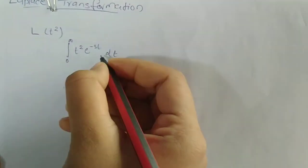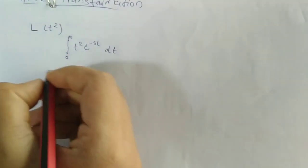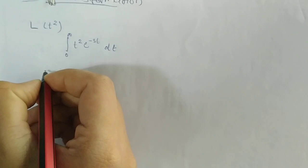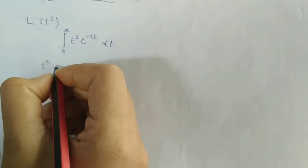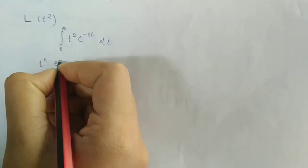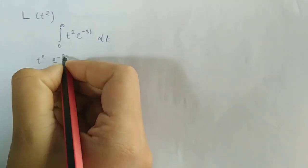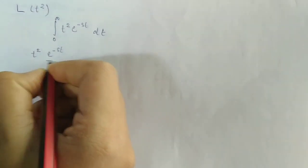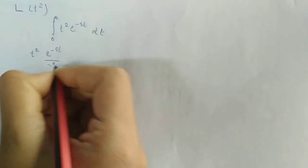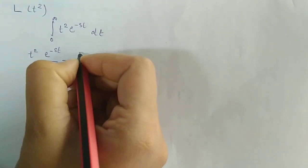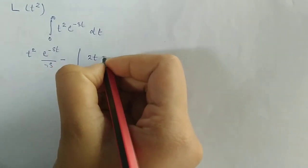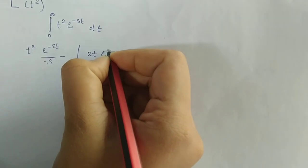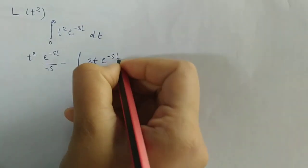We set u equal to t squared and apply integration by parts: first function into integral of the second, minus integral of derivative of the first into integral of the second.